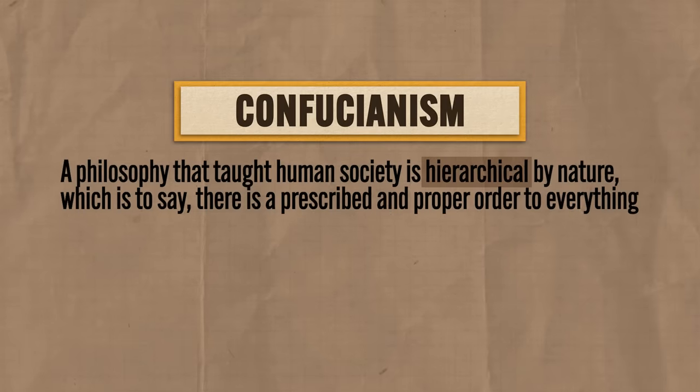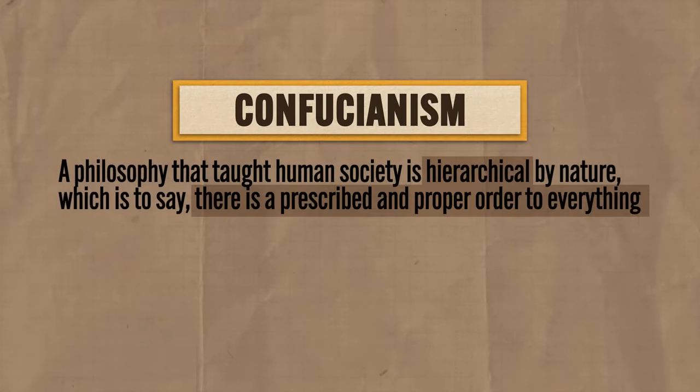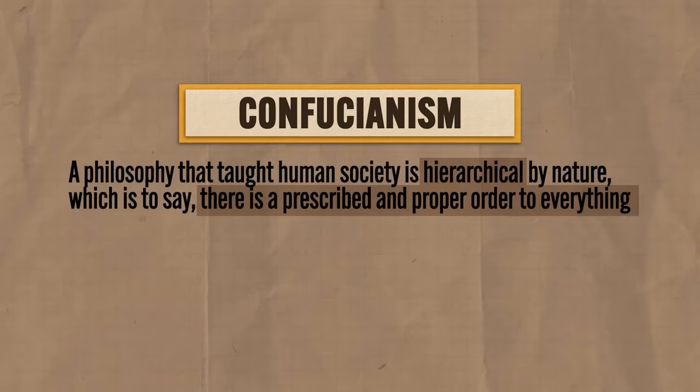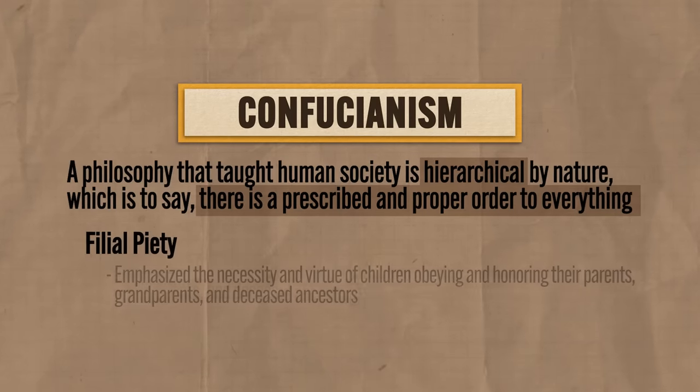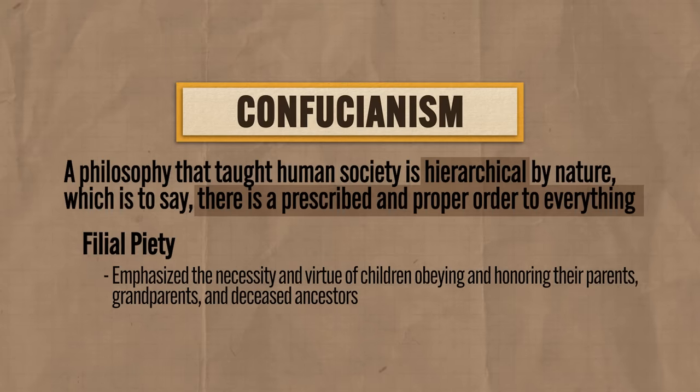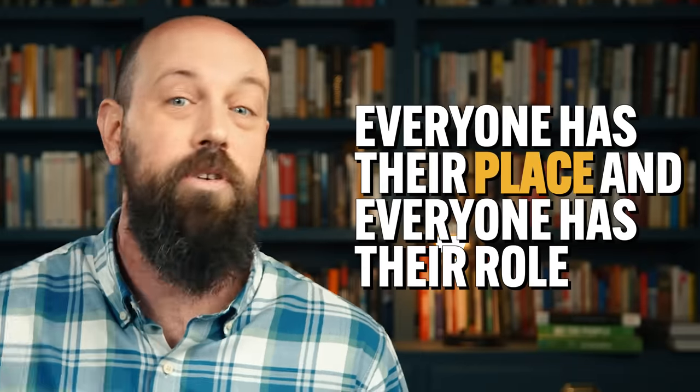One of the main ideas at the center of Confucianism is that the nature of society is hierarchical, meaning there are prescribed and proper orders for everything. There are those above and those below. Citizens submit to the state, women submit to men, juniors submit to elders, children submit to parents. In order to achieve harmony in society, those below needed to defer to those above, and those above needed to care properly for those below. Important to this societal arrangement was the idea of filial piety, which emphasized the necessity and virtue of children obeying and honoring their parents, grandparents, and even deceased ancestors.